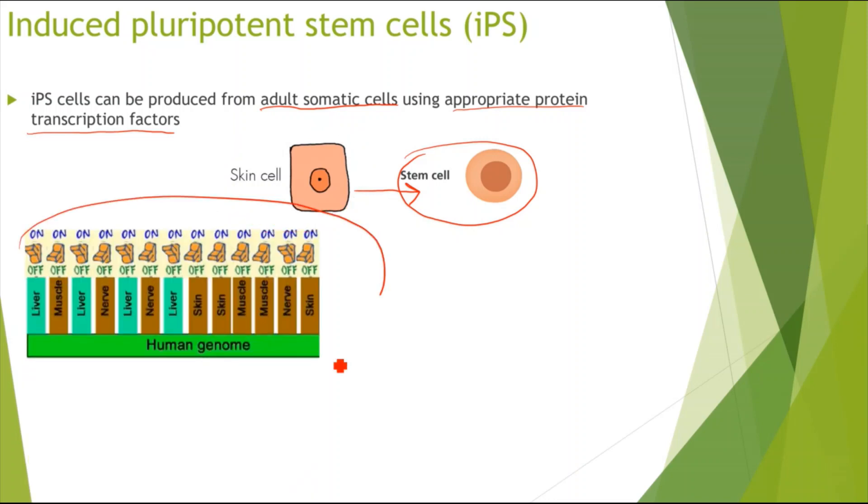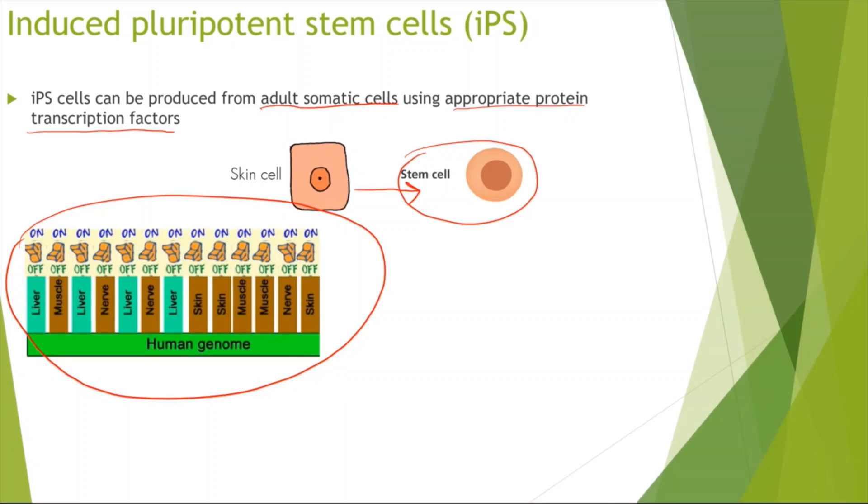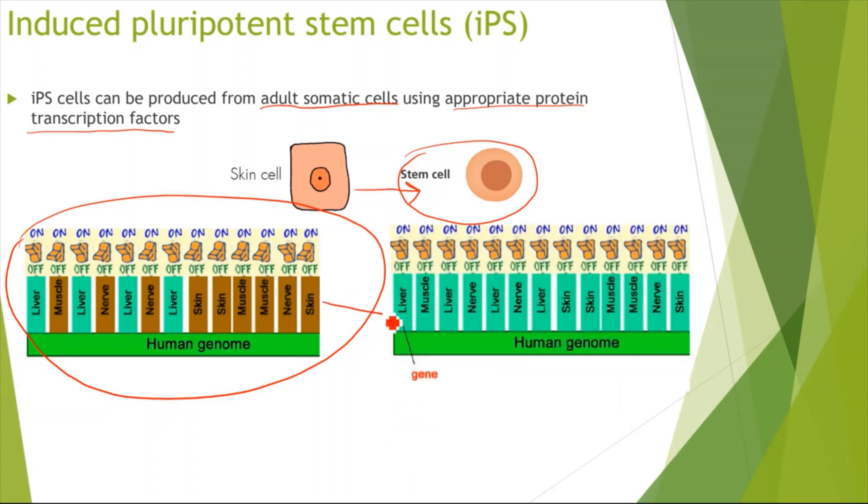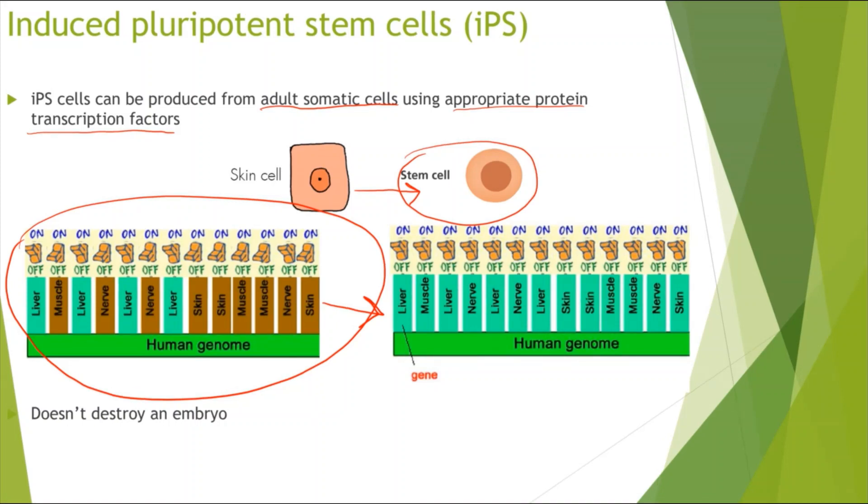So for example in this case we have a liver cell which is specialized and it has some of the genes turned on and some of the genes turned off. Now what we can do is using appropriate transcription factors we can turn on these genes. So we can turn on all the genes that have been turned off before, and that will mean that our cell will become unspecialized. Now these are quite useful because we are not using an embryo. We're using cells from a human body cell, so we'll be able to gain consent from the person who we are using the cells from, which can't be done in the case of embryo.